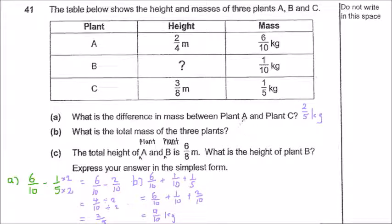And for B, the answer will be 9 over 10. And lastly, the total height of Plant A and B is 6 over 8m. What is the height of Plant B? Express your answer in the simplest form. Okay, so if you look at part C, you see if you just take the total minus away Plant A, I can get Plant B.